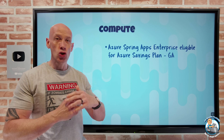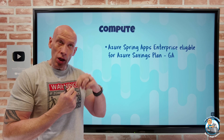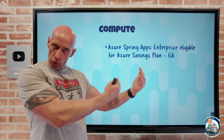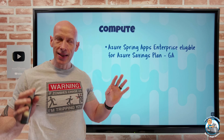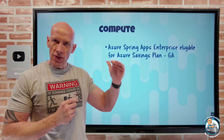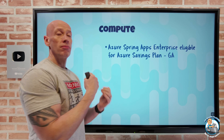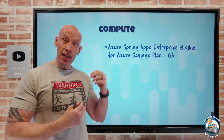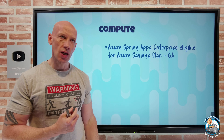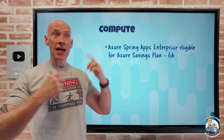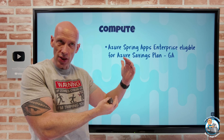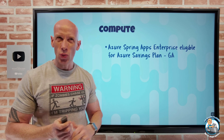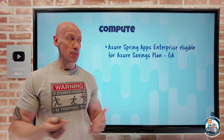Azure Savings Plan — remember — is that super flexible dollar commitment per hour for a one or three year term. Any region, doesn't care, for all of those compute services that are included. Now Azure Spring Apps Enterprise is included as one of those compute services. So every hour that billing mechanism wakes up and applies the biggest discount it can to what services you have of that type, and then works its way down. So it's always going to try and give you the best bang for the buck.